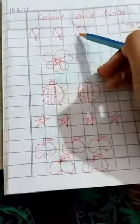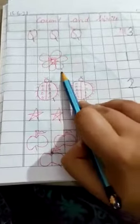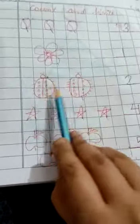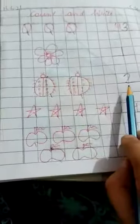1, 2, 3. There are 3 walls. Write down number 3 here. 1. There is 1 flower. Write down number 1 here. 1, 2. There are 2 ladybugs. Write down number 2 here.